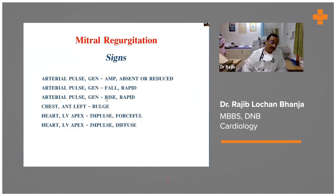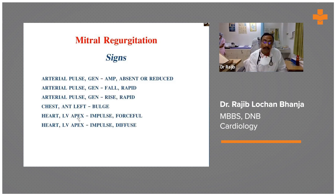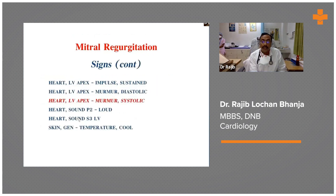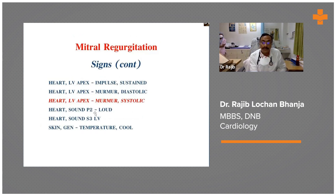On feeling the pulse, unlike mitral stenosis where it can be absent or reduced, in mitral regurgitation it is usually a rapid rise and fall. On examination, the apex beat is forceful, diffuse, and displaced outward, and the apical impulse is sustained. The first heart sound is soft — in contrast to mitral stenosis where the first heart sound is loud. The pulmonary component P2 is loud because pulmonary artery pressure is increased. Sometimes S3 is found, which is very rare or not present in mitral stenosis.